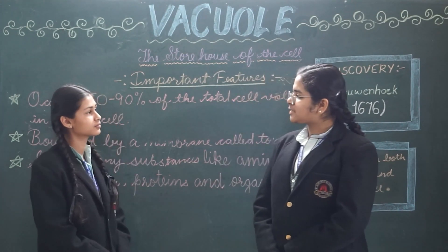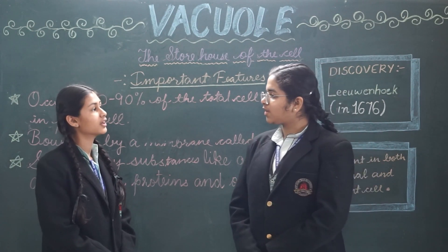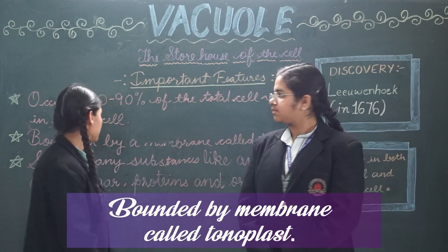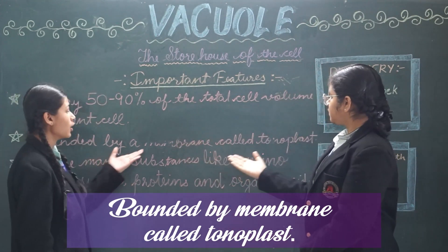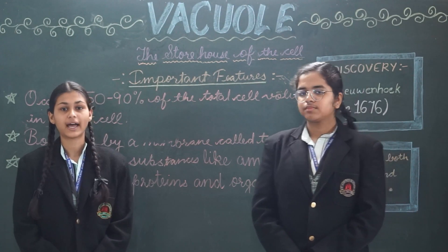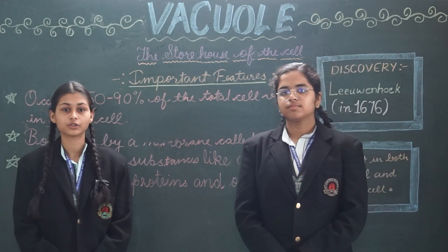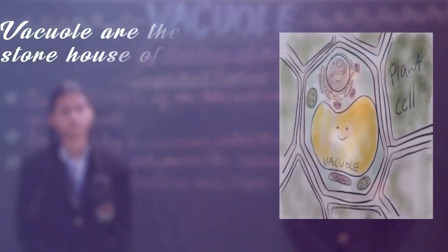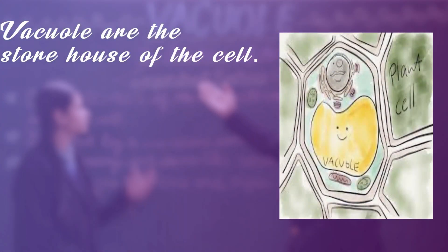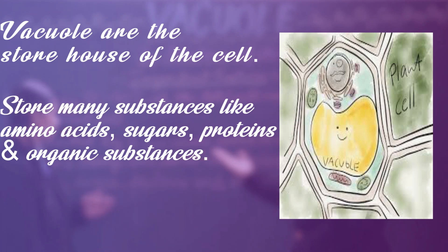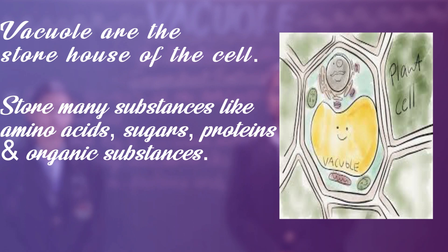Aditi, will you please explain me the functions of a plant vacuole? Yes, sure. Vacuoles are full of cell sap. It is bounded by a membrane called the tonoplast. It also provides turgidity and rigidity to the plant cell. As the plant vacuole is also known as the storehouse of the cell, many substances like amino acids, sugars, proteins, and organic acids are stored in vacuoles.